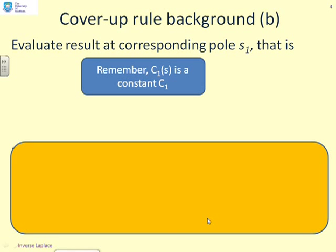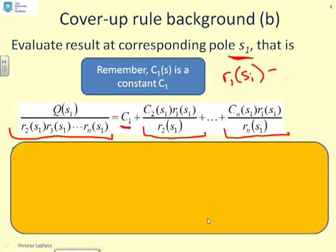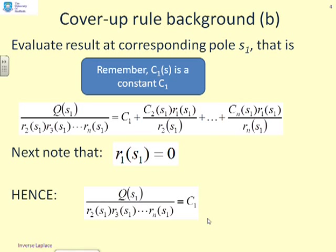What we're going to do is evaluate what we had on the previous page at the corresponding pole S1. So there's the expression: Q of S1 over R2 of S1 times R3 of S1, all the way up to Rn of S1, equals C1. And then we've got all these other terms that still have R1 in them. Now, R1 of S1 equals 0 by definition, because S1 is the root of the factor R1. So all those remaining terms are going to become 0.